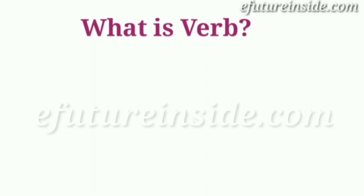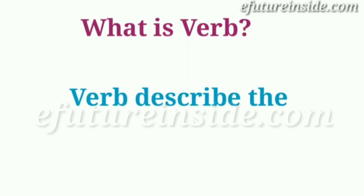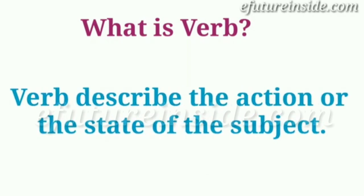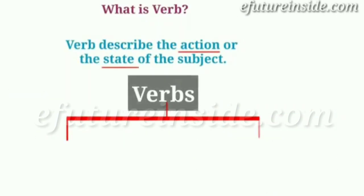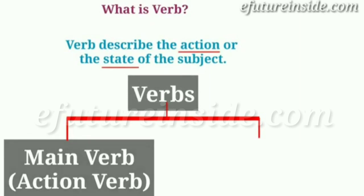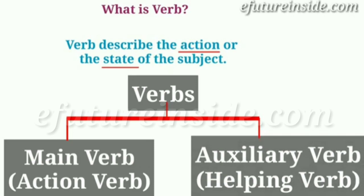First we will understand what is a verb. Verb describes the action or the state of the subject — meaning, what action or activity the subject is doing, or what state they are in. Verbs are mainly divided into two parts: first, main verb, which is the action verb; and auxiliary verb, which is the helping verb.